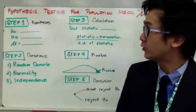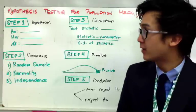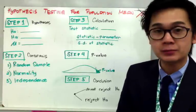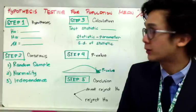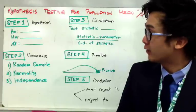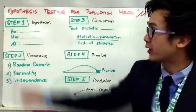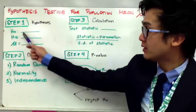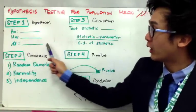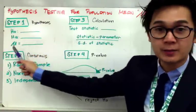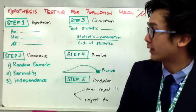Today we're going to perform hypothesis testing for population mean. There are a series of steps that we need to use in performing hypothesis testing for the population mean. The first step is writing out your hypotheses — your null hypothesis and your alternative hypothesis. You need to make sure that you are specifying the parameter that you are using for the word problem you are working on.